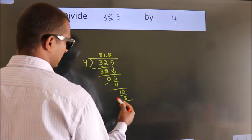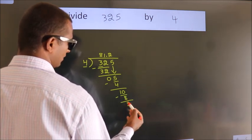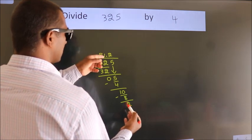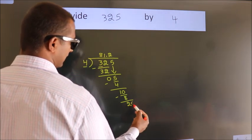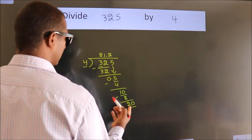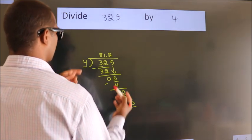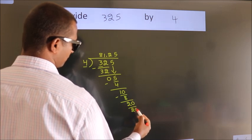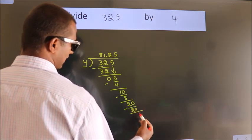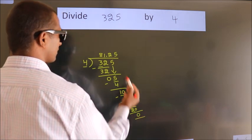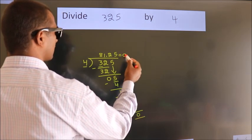Now we subtract. We get 2. After this, we already have the decimal, so directly take 0. So, 20. When do we get 20? In the 4 table, 4 times 5 equals 20. Now we subtract. We get 0. We got remainder 0. So this is our quotient.